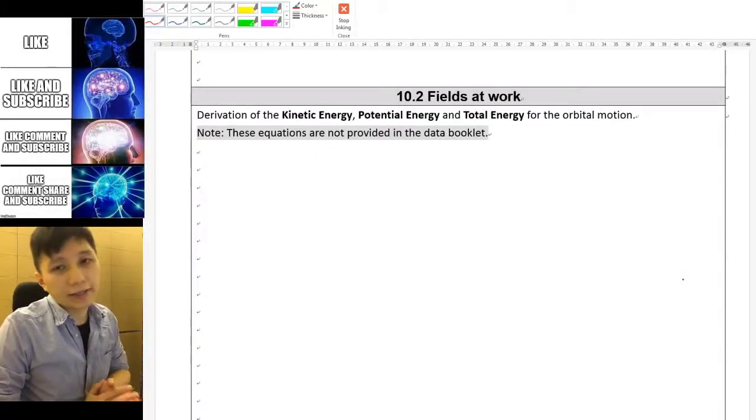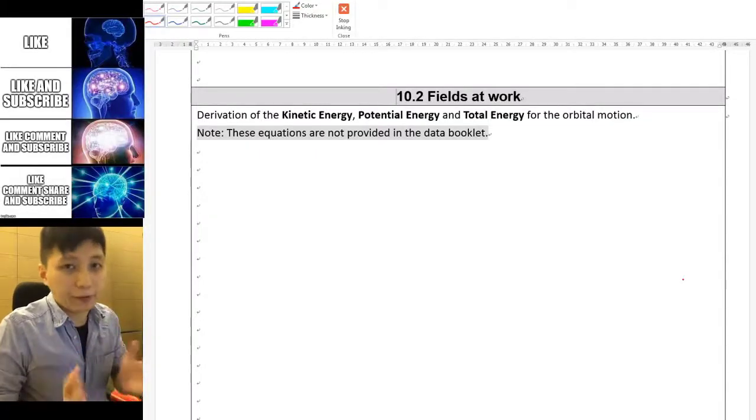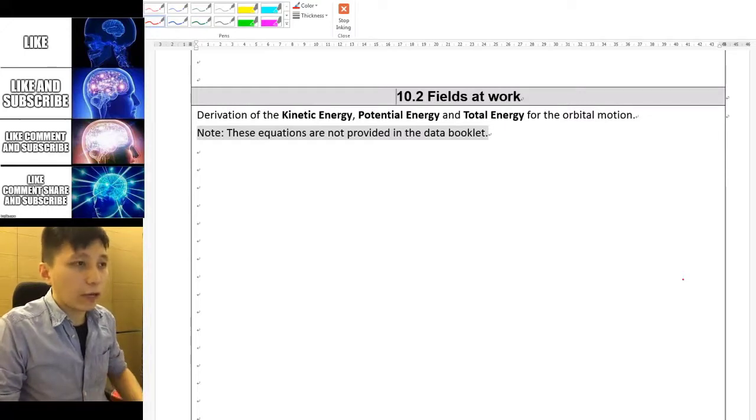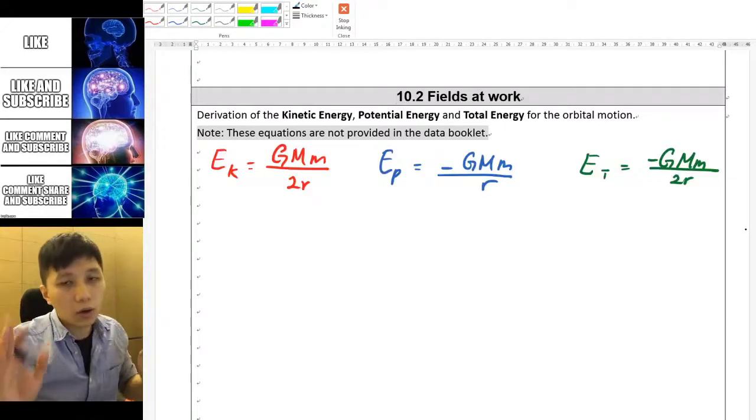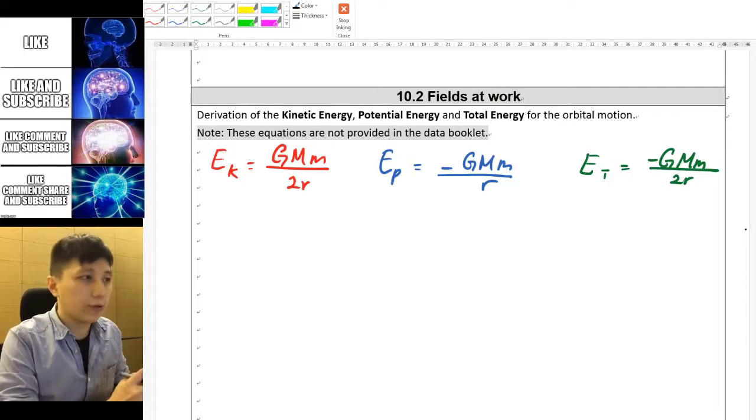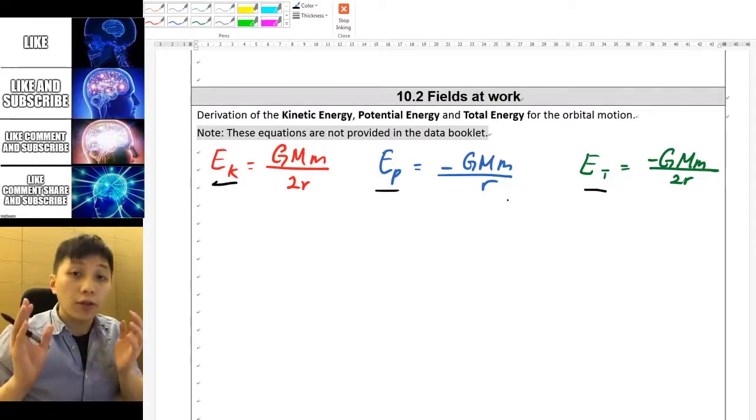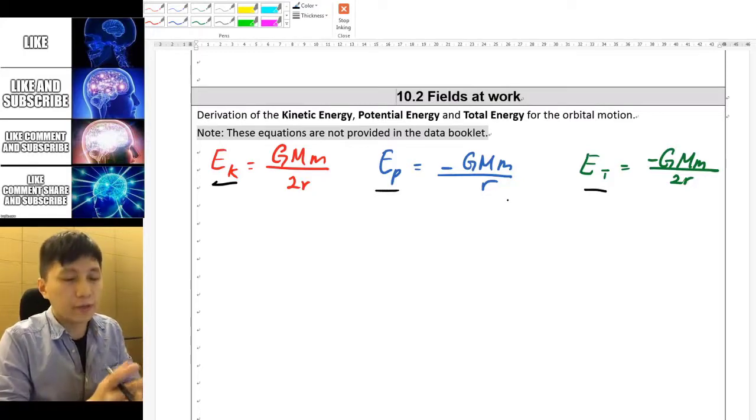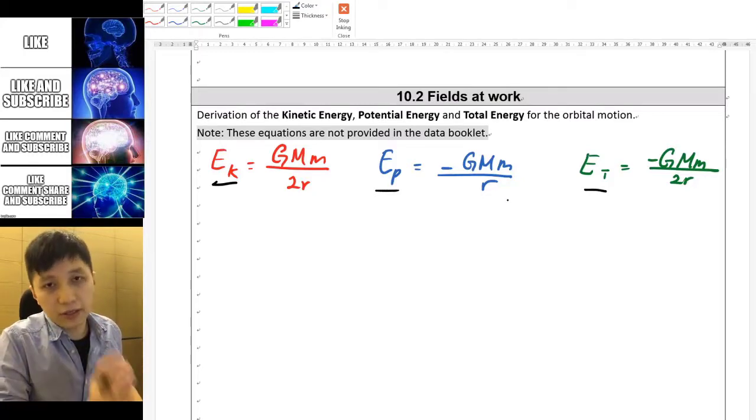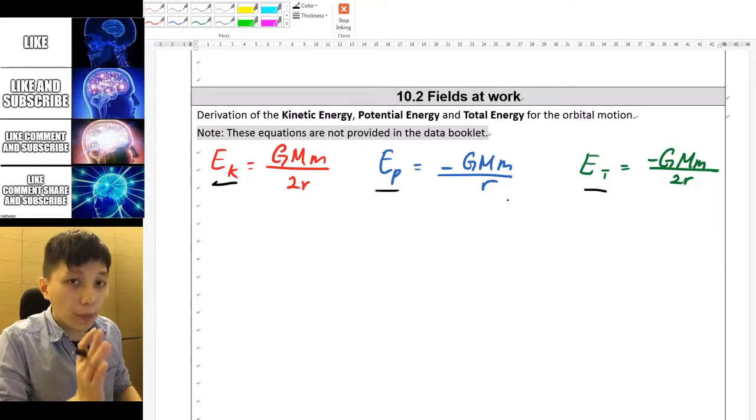Without further ado let's start to derive it because this is very fun. Let me give you the equations first. Alright these are the three equations about kinetic energy, potential energy, and the total energy. The thing that I want you to do now first is to copy these three equations into your personal data booklet. Do it now.